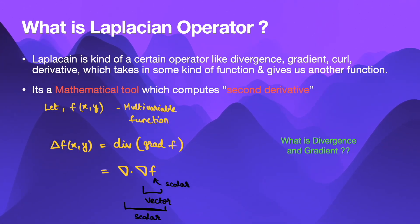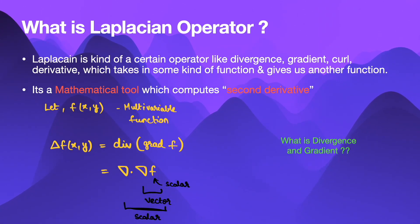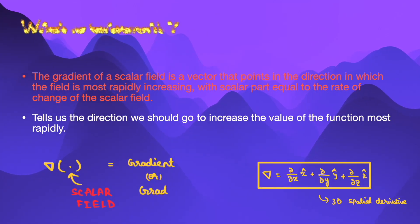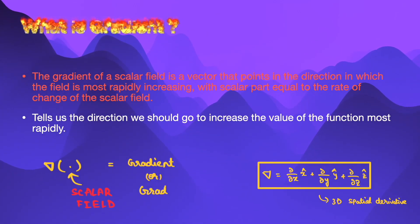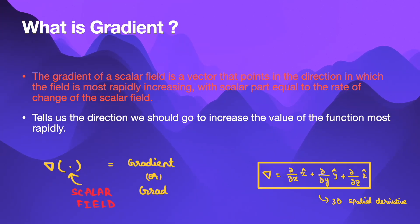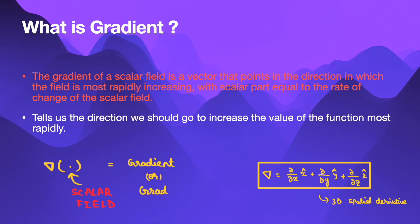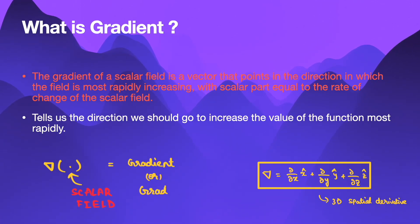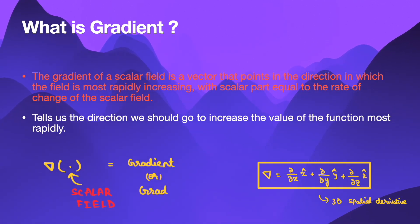Now before going deep into the Laplacian operator, let's briefly discuss what is divergence and what is gradient. Gradient operates on a scalar field and gives a vector as an output, where the magnitude of the vector indicates the rate of change of the scalar field, and the direction of the vector tells us the direction we should go to increase the value of the function most rapidly.